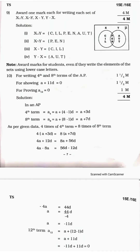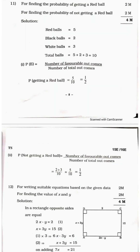For Question 9 on sets: one mark each for X union Y, X intersection Y, X minus Y, and Y minus X. Marks are awarded even if students write the elements of the sets in lowercase letters. For Question 10 on AP: half a mark each for writing the fourth and eighth terms, half a mark for showing a + 11d = 0, and one mark for proving a₁₂ = 0 — totaling four marks.